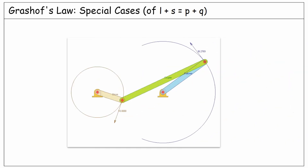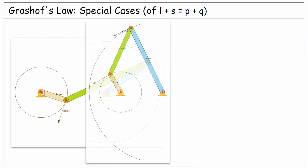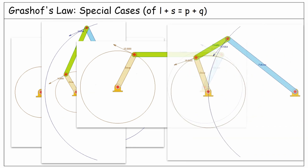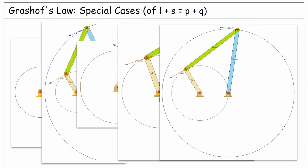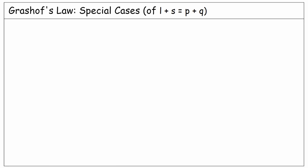In this lecture, we will discuss some of the special cases of the Grashoff's condition where the longest plus shortest is equal to the summation of the two other links. As mentioned in the previous lecture, in the case of equal L plus S and P plus Q, we will have the same subclasses as the less than condition, but here are some special considerations to notice.